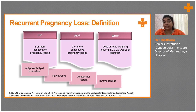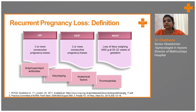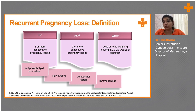So what is recurrent pregnancy loss? According to UK guidelines, miscarriage happening more than three consecutive times is called as RPL. According to USA guidelines, it is more than two consecutive times. According to the WHO guidelines, it is loss of fetus weighing less than 500 grams at 20 to 22 weeks of gestation. It may be due to different causes like Apla syndrome, SLE, congenital abnormalities, or thrombophilias.